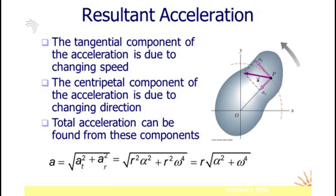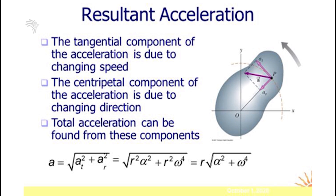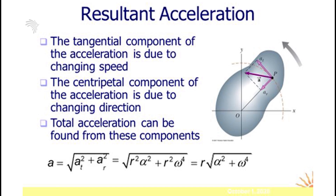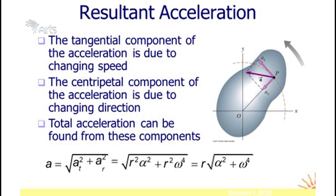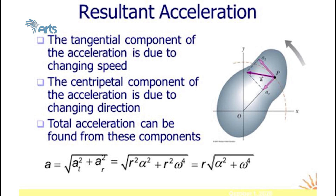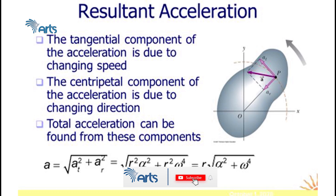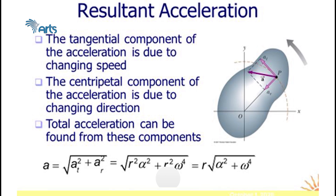To find the resultant acceleration, since tangential and radial accelerations are perpendicular, apply the Pythagorean theorem: resultant acceleration a equals the square root of a_t squared plus a_r squared, where a_t is tangential acceleration and a_r is radial acceleration. In uniform circular motion, since tangential speed is constant, there is no tangential acceleration, so the resultant acceleration equals the centripetal acceleration.